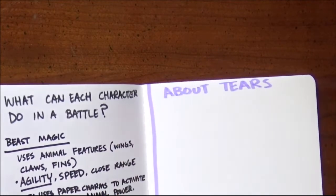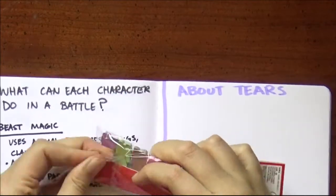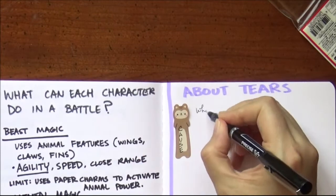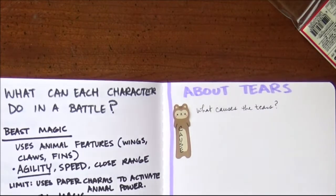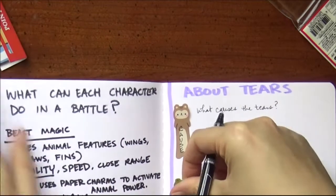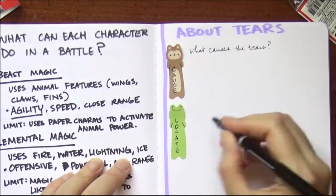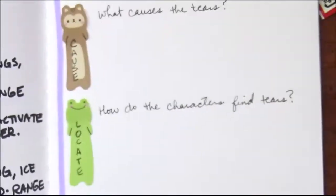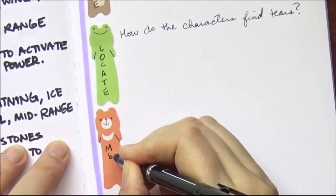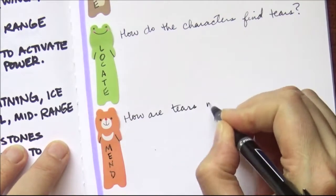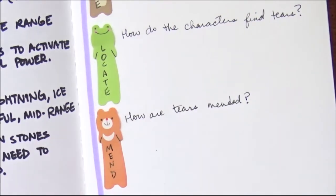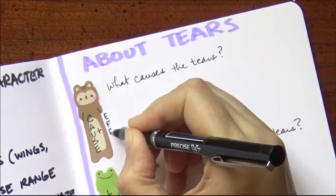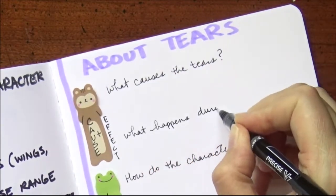Then I wanted to figure out a little bit more about the tearing of magic. I knew I wanted this magic shield and it gets little tears in it that my characters have to go and fix. I took notes about what causes the tears, how they find the location of these tears — and also used it as an excuse to use some little memo note stickies my brother got me from Japan. Things like how are these tears mended, and what happens during a tear?